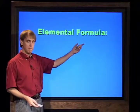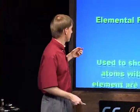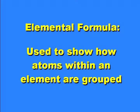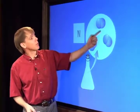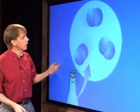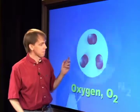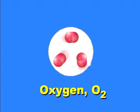Elemental formula. In the case of nitrogen, the nitrogen atoms tend to group together in pairs — a nitrogen molecule. We can indicate how atoms within an element group together using the elemental formula, which shows how atoms are grouped. Nitrogen atoms come in pairs, so we write N2. The subscript tells us each unit is a pair. Oxygen also comes in pairs: O2 is the elemental formula for oxygen.